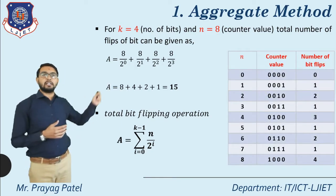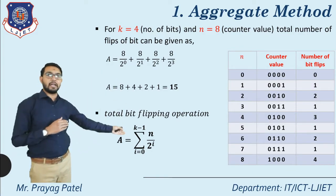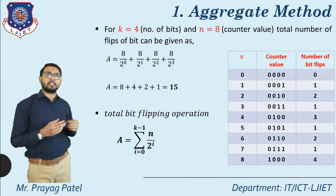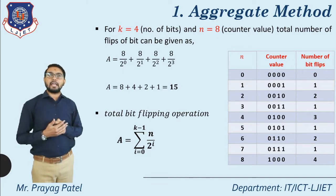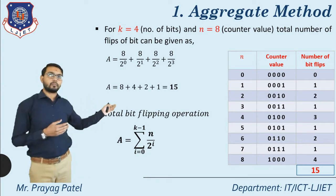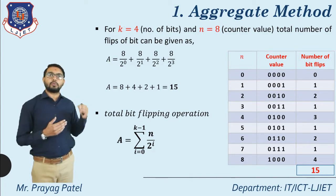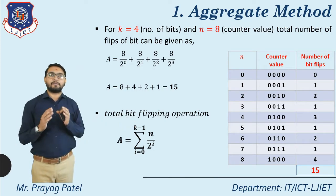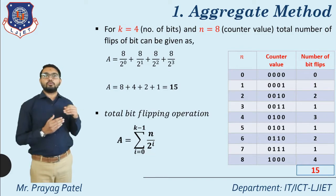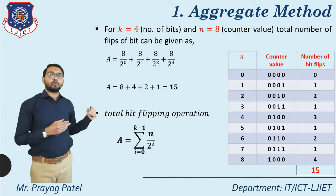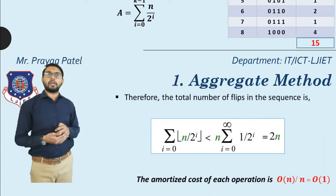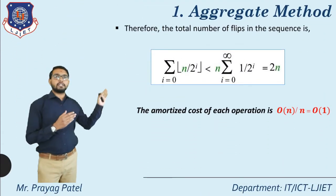For k equal to 4 and n equal to 8, consider the binary representation and how many times each bit changes — the third column shows number of bit flips. The total is: 8/2^0 + 8/2^1 + 8/2^2 + 8/2^3 = 8 + 4 + 2 + 1 = 15, which matches the last value in the table. The final equation for the aggregate method is: sum from i=0 to k−1 of n/2^i, which gives the total number of bit flips.